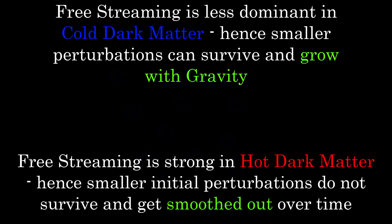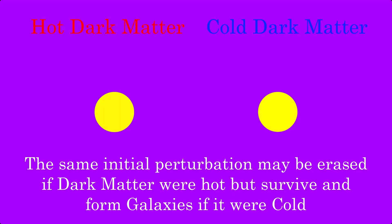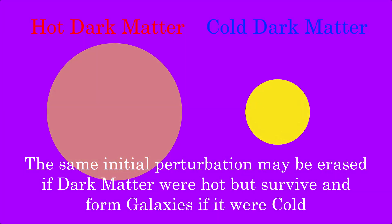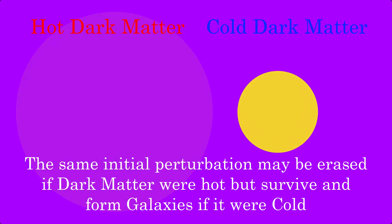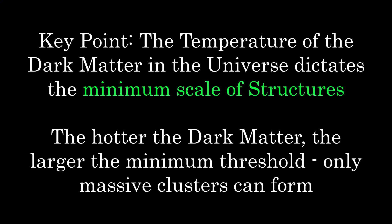Hence the overall effect of free streaming is to erase density perturbations over time. For a small perturbation, free streaming of hot dark matter happens quicker than the perturbation can accrete more matter via gravity, and so the perturbation gets smoothed out. Eventually there will be a lower temperature whereby the perturbation can accrete matter at a faster rate than free streaming erases the structure. This is crucial, as it means we can deduce the temperature of dark matter by looking at the minimum mass and size of structures in the universe.